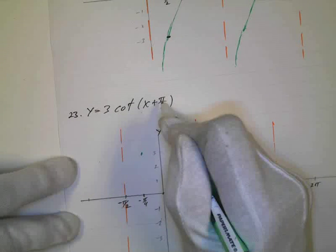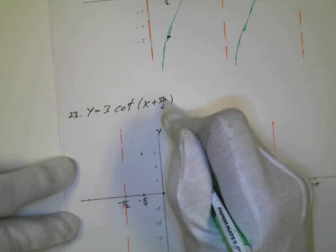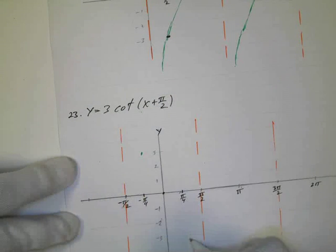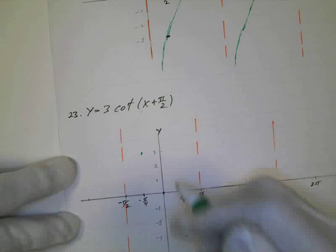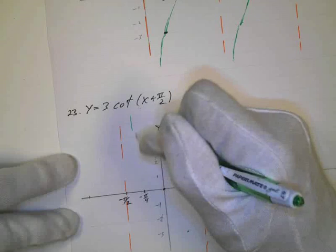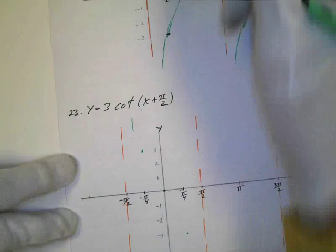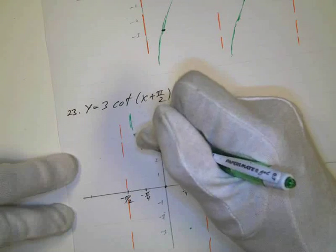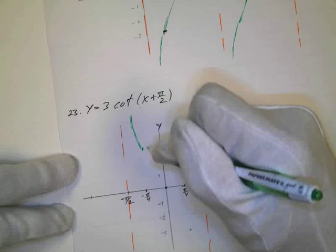Be really careful when we substitute it. Now if I put pi over 4 in here, pi over 4 plus pi over 2 is 3 pi over 4. That's negative 1. Times 3 is negative 3. So there you go. And now that's back to the normal shape.